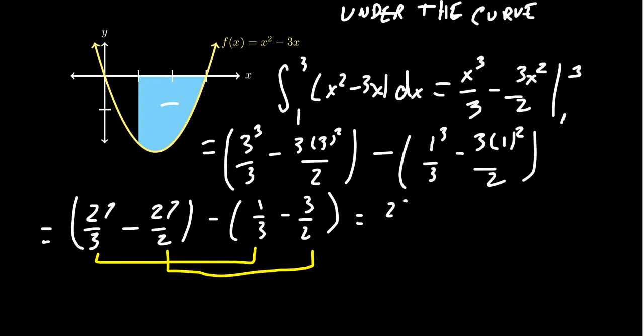And then you're going to have a -27/2 + 3/2. And so that's going to give us a -24/2 right there.